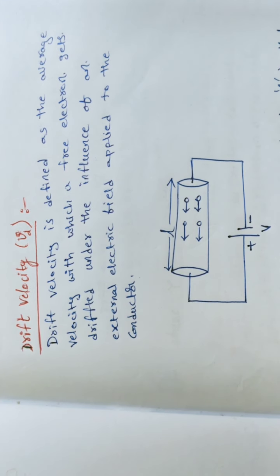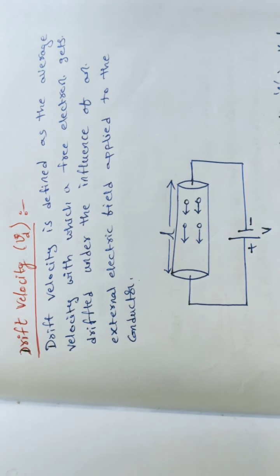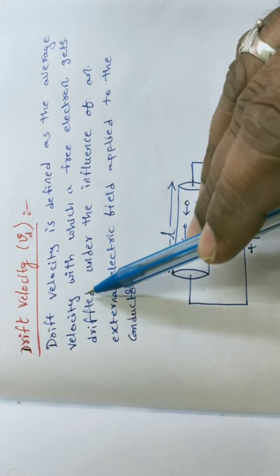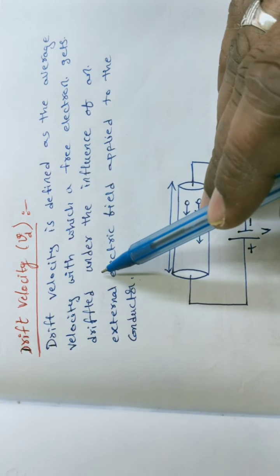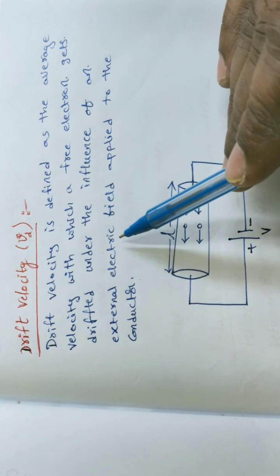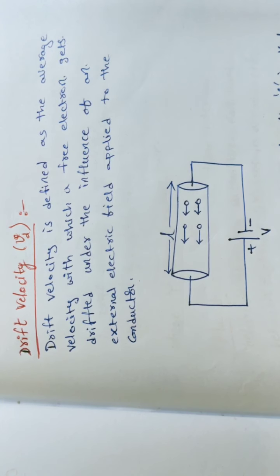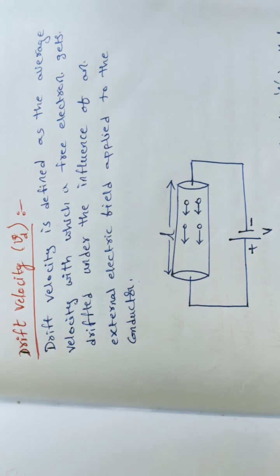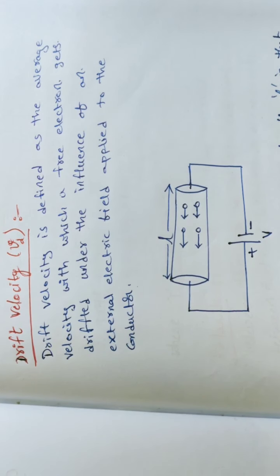Drift velocity is defined as the average velocity with which free electrons get drifted under the influence of an external electric field applied to the conductor. With the impact of the external electric field, the free electrons in a conductor will drift with a certain velocity.